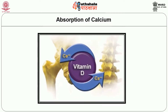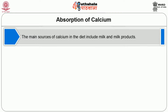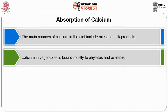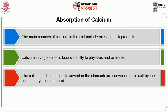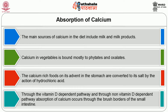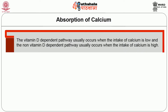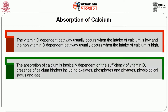Now let us see how the absorption of calcium takes place in the human system. The main dietary sources include milk and milk products. Calcium in vegetables is usually bound to phytates and oxalates. Calcium-rich foods entering the stomach are converted to salts by hydrochloric acid. Absorption of calcium occurs through the brush borders of the small intestine via the vitamin D-dependent pathway and the non-vitamin D-dependent pathway. The vitamin D-dependent pathway occurs when intake is low; the non-vitamin D-dependent pathway occurs when intake is high. Absorption depends on vitamin D sufficiency, presence of calcium binders including oxalates, phosphates, and phytates, and the physiological status and age of the individual.